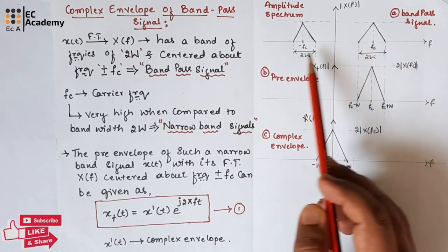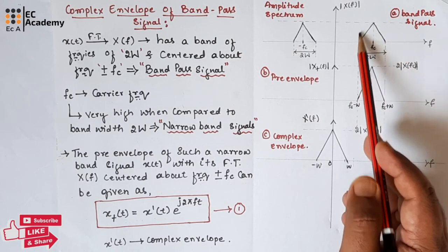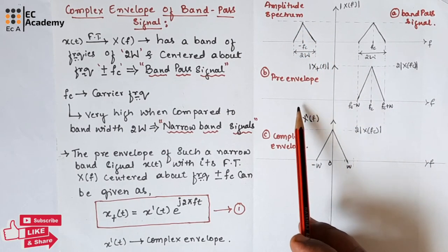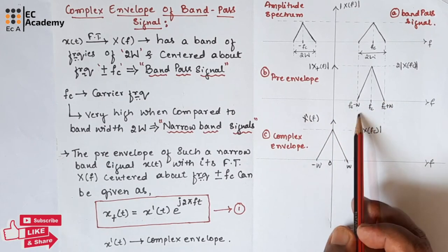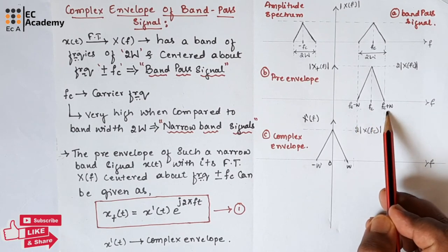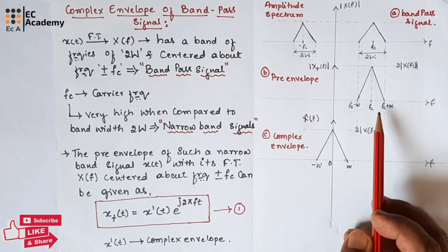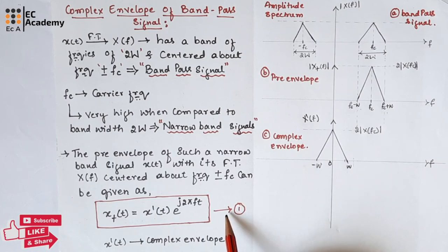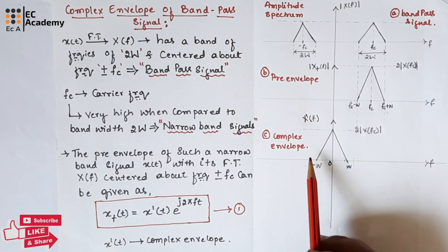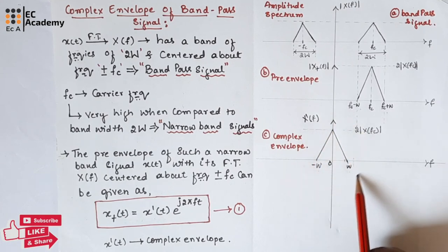Figure A shows the amplitude spectrum of the band pass signal, which has both positive and negative frequencies. Figure B shows the frequency band of spectrum X⁺(t), which is limited to the band of frequencies Fc minus W to Fc plus W. Therefore, if we apply the frequency shift property of Fourier transform to equation number 1, we can find that the spectrum of complex envelope X̃(t) is limited to the band minus W to W, as shown in figure C.